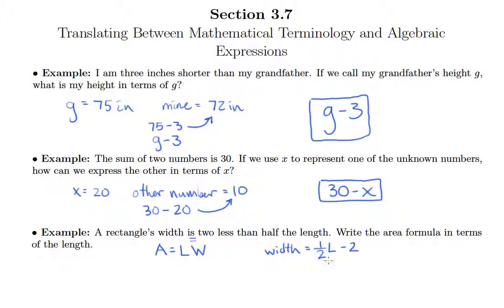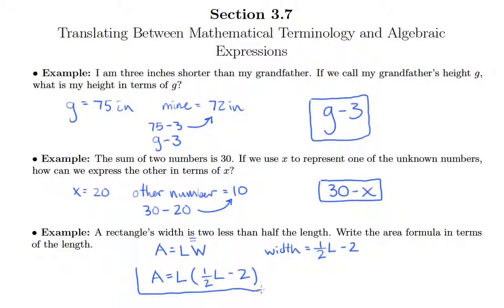So instead of writing area equals length times width, we can write area equals length times one half the length minus two. That is our area formula written in terms of only the length.